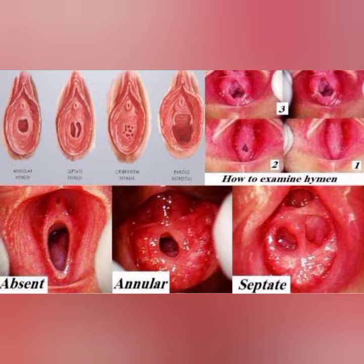A septate hymen is divided into two parts and is also known as bridging tissue. A labial hymen looks like vulvar lips.